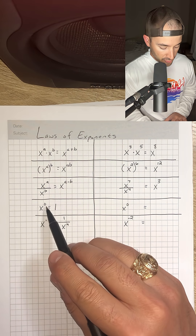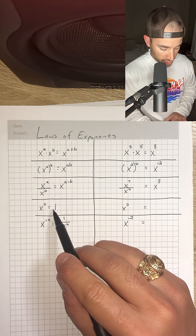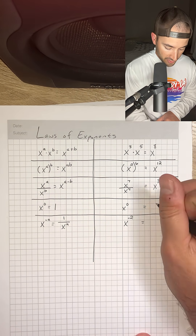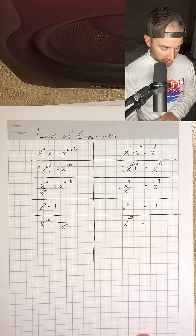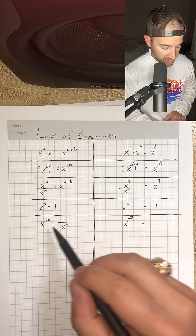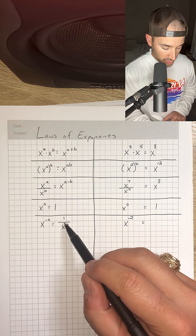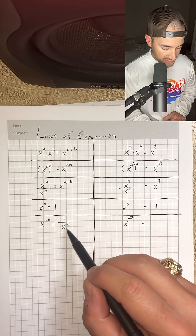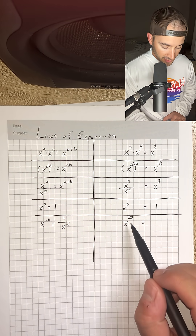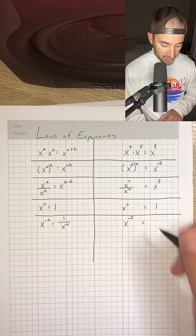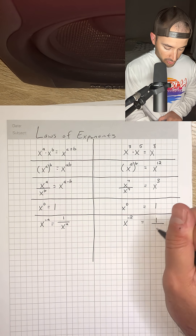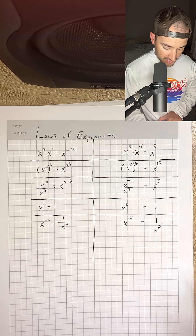x to the zeroth power is equal to 1, so anything to the zeroth power is always equal to 1. And then x to the negative a is equal to 1 over x to the a, so x to the negative 2 would be equal to 1 over x squared.